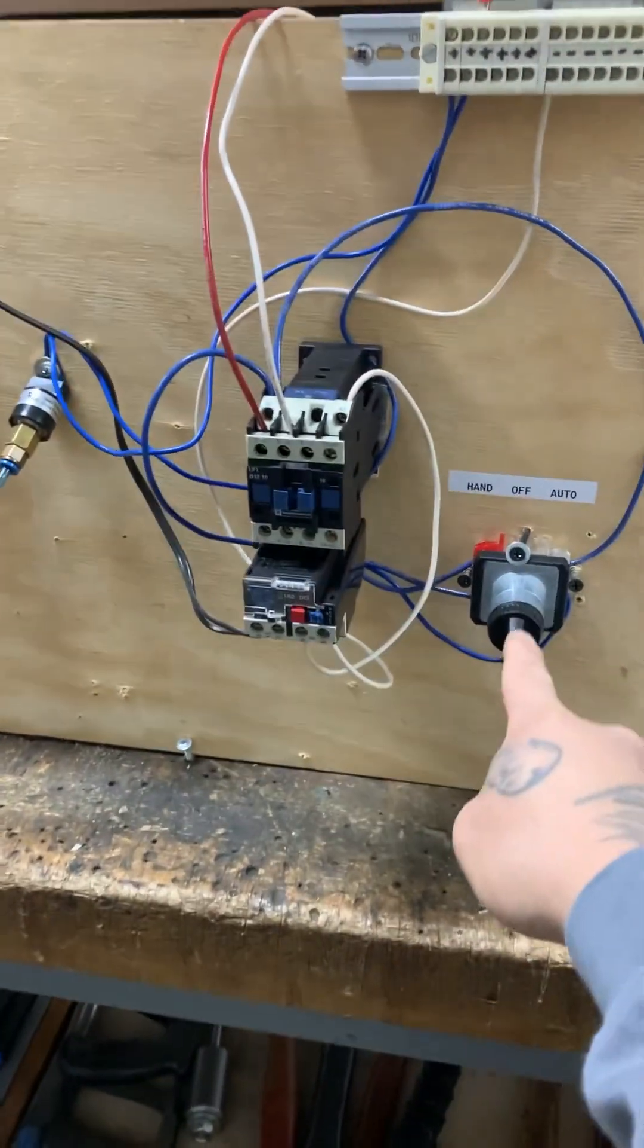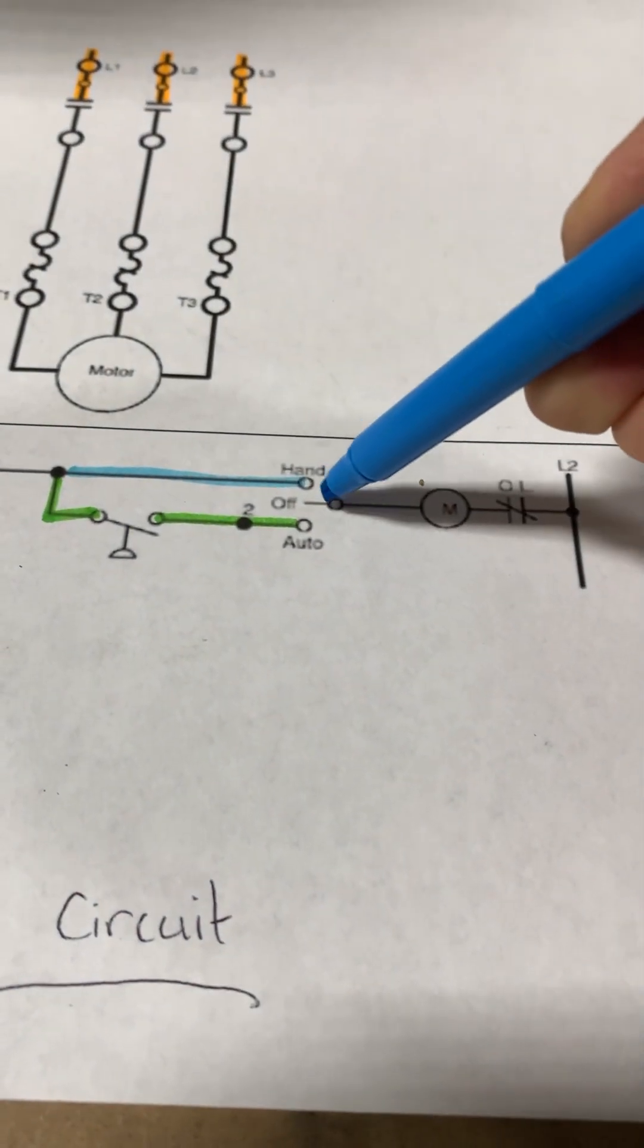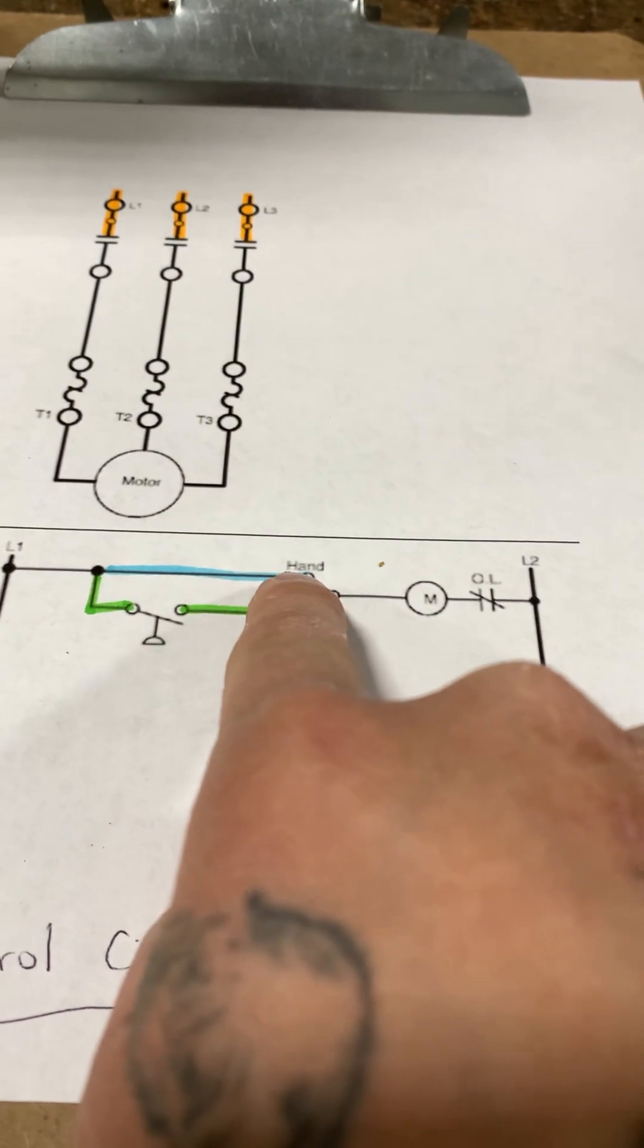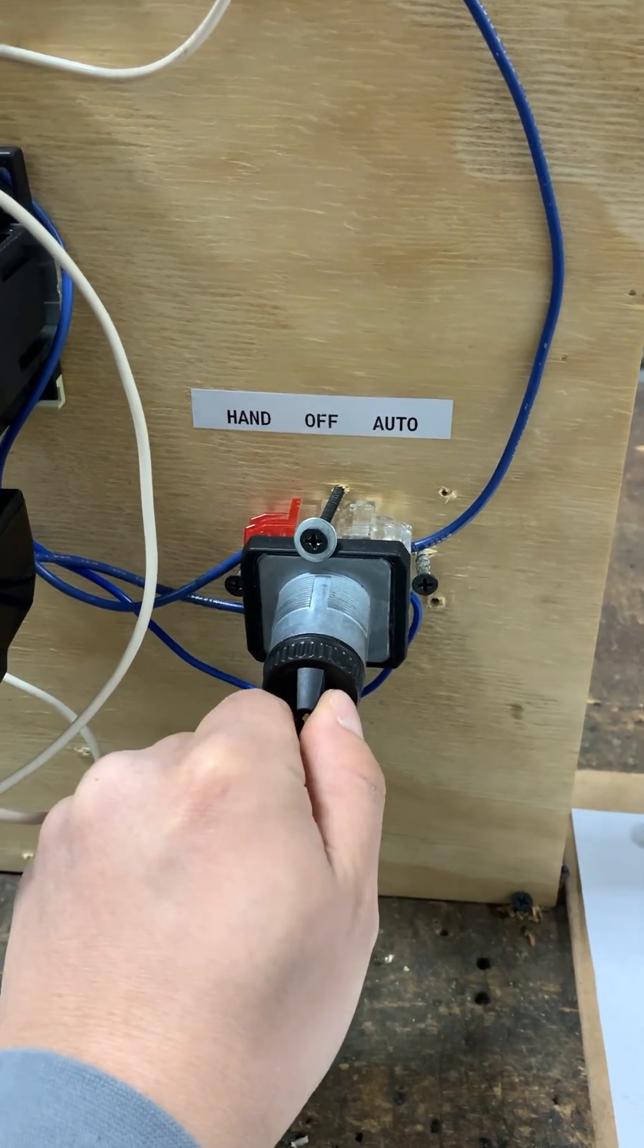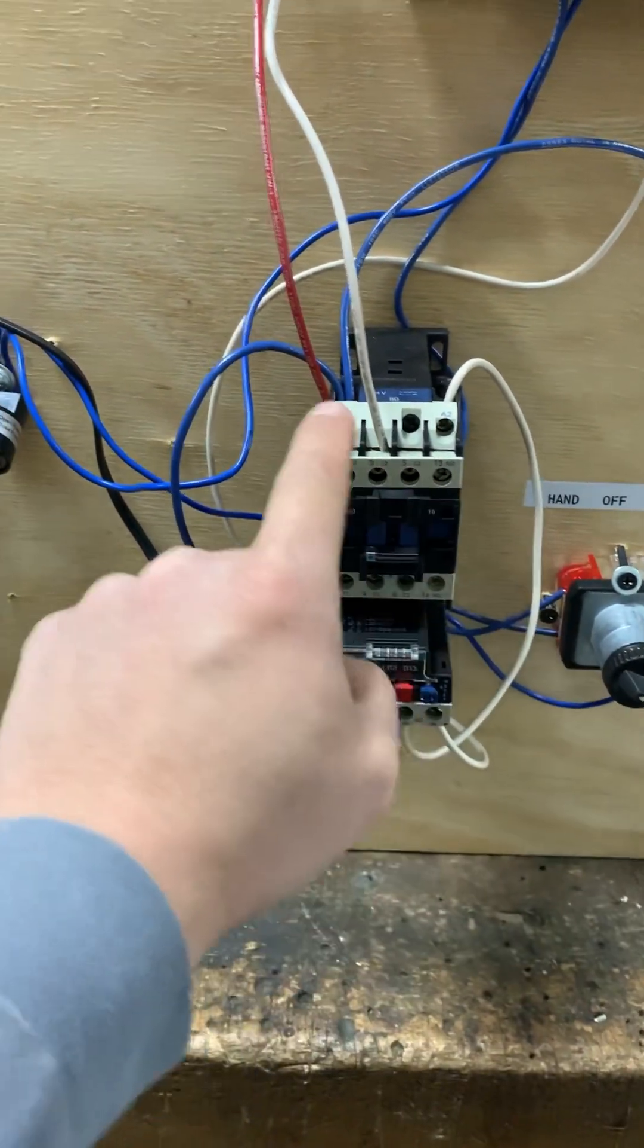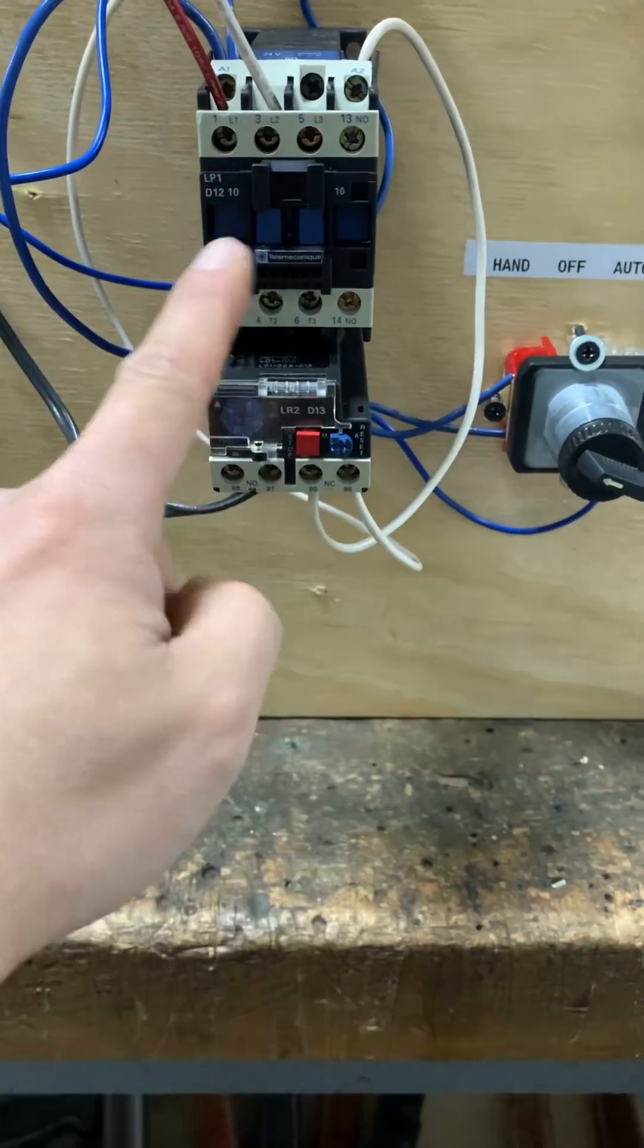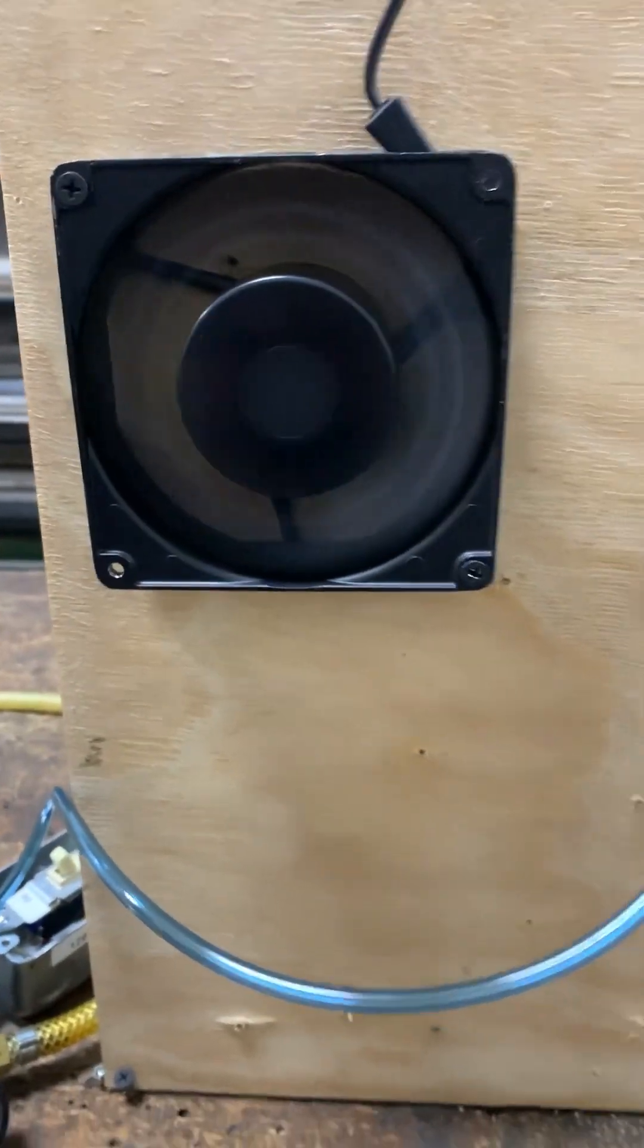On the off position, you can see that this lever here is not making contact to either the hand or the auto. Hand is just manual. You're manually sending control voltage directly over to your motor starter coil. So let's say we want to put it to manual mode or hand. As soon as we put it to hand, our contactor pulls in because we are sending a direct 24 volts DC to our coil which then closes the contacts. Now it allows the 120 to travel right through this motor starter, through the overload, out these wires and directly to our load. And here you can see that our fan is turning.